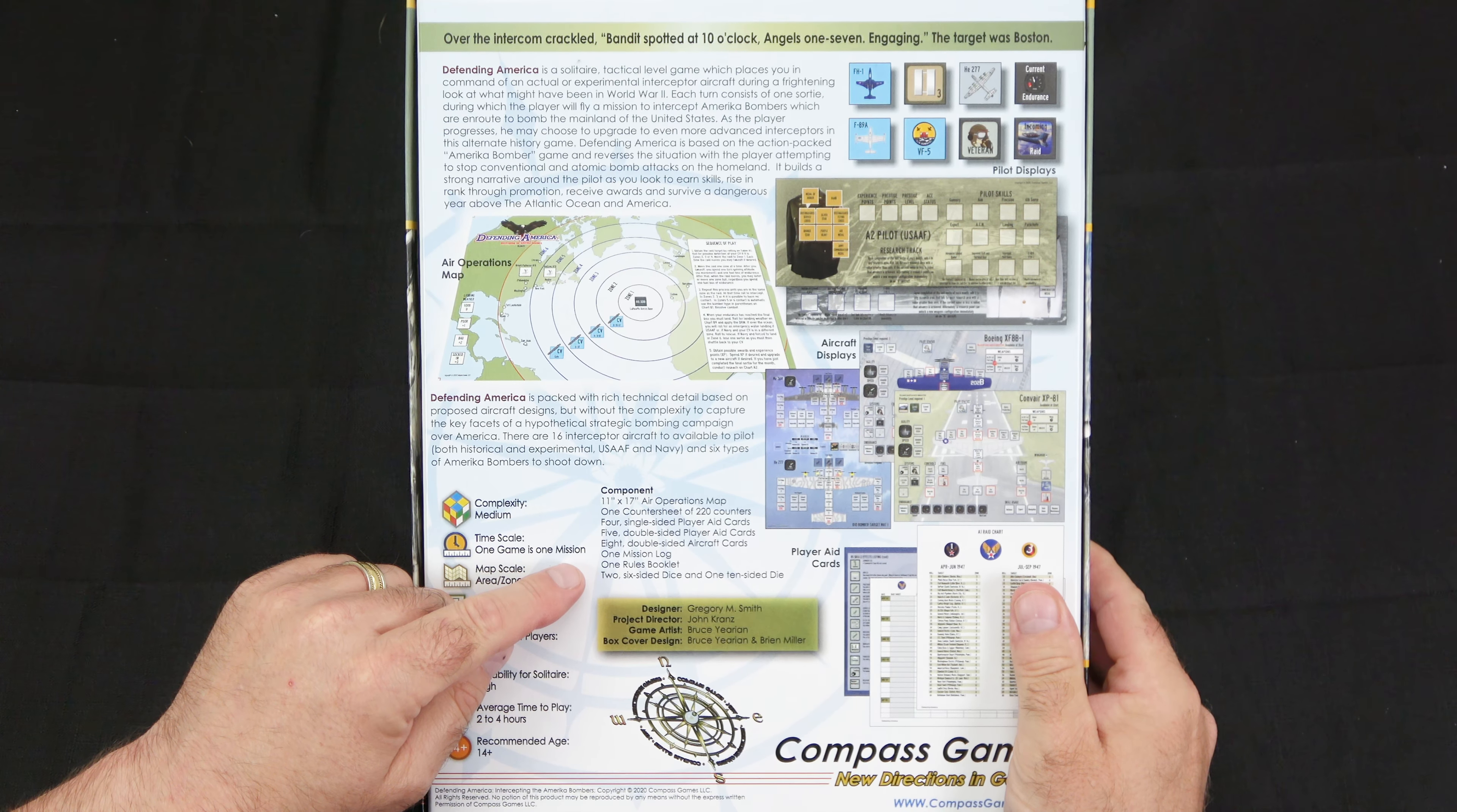Next, we have the flight school sheet, which will give you the steps that you'll take to create your pilot. On the next sheet, we have tables that you'll be rolling on for different aspects of the game. Fighter damage, bomber defensive fire, attack results against bombers, bomber group damage, aircraft damage listings, and the bomber random damage table.